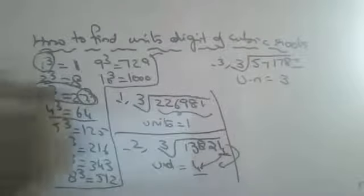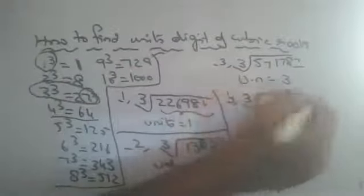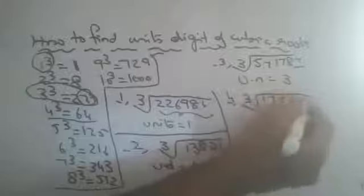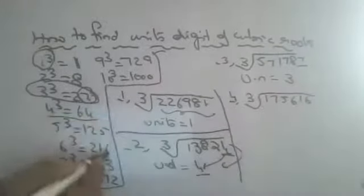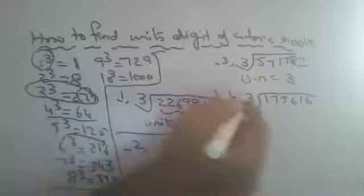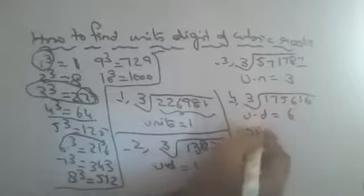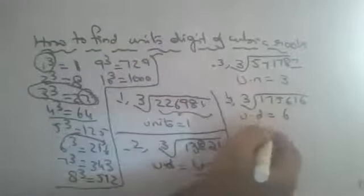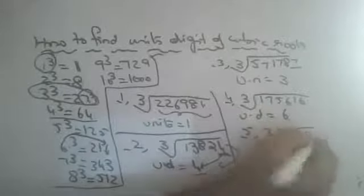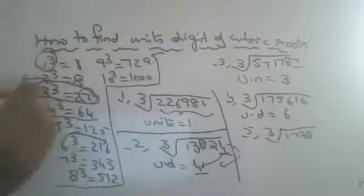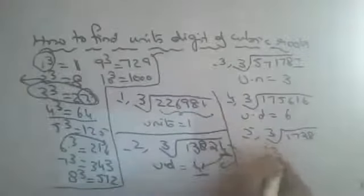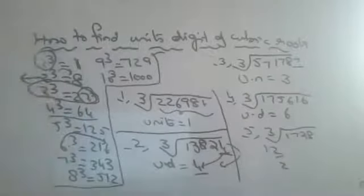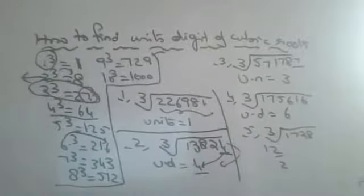What is the units digit of the cubic root of 175616? Last digit is 6 — which number gives units digit 6? Only 6³=216, so units digit is 6. What is the units digit of the cubic root of 1728? Last digit is 8, which is 2³=8, so units digit is 2. Only two is possible.